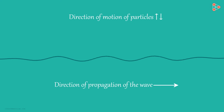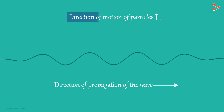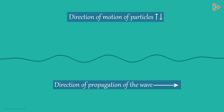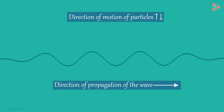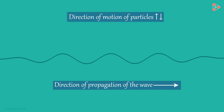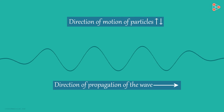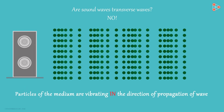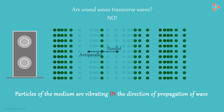The particles in the string are moving up and down while the direction of propagation of the wave is towards the right. The particles are vibrating in a direction perpendicular to the direction of the wave. Such waves are called transverse waves. So are sound waves transverse waves? The answer is no — because the particles of the medium are vibrating in the direction of propagation of the wave.